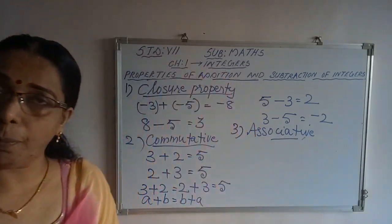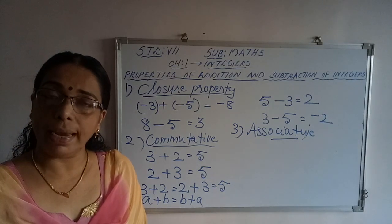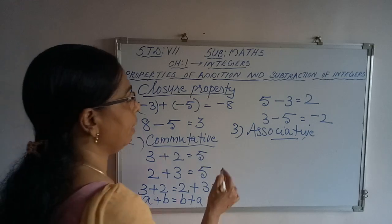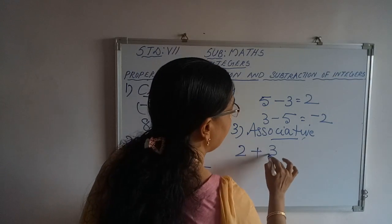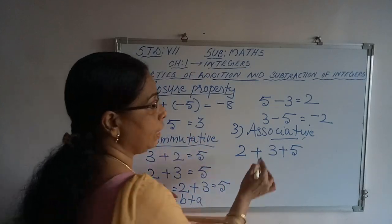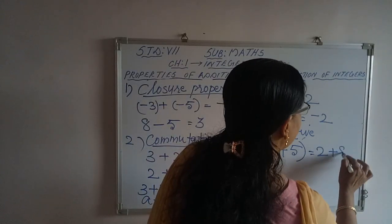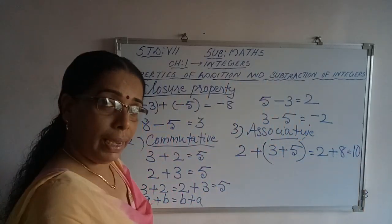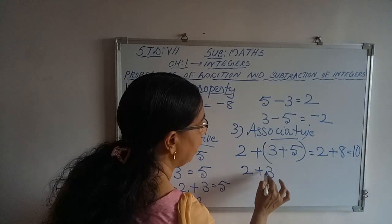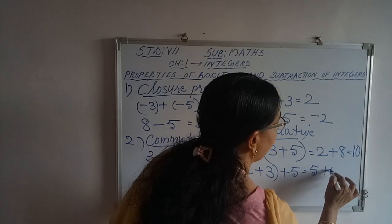The third property is called associative property. If there are more than two integers, the integers can be grouped in any order and added, and the answer remains the same. For example, 2 plus 3 plus 5: first I group 3 and 5 to get 8, then 2 plus 8 equals 10. Now grouping differently, first group 2 and 3 to get 5, then 5 plus 5 equals 10. The answer is the same.